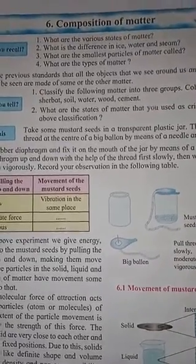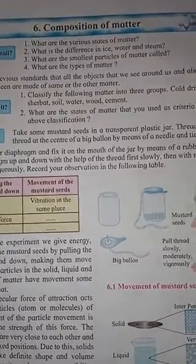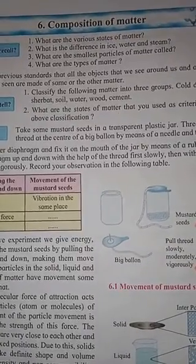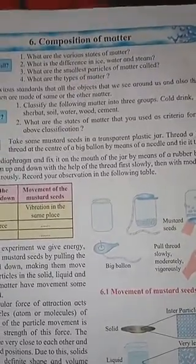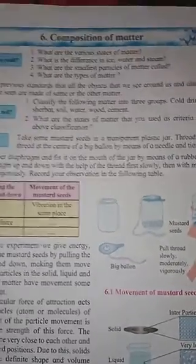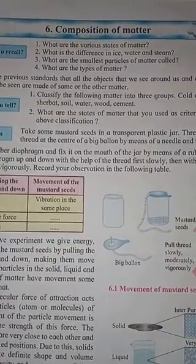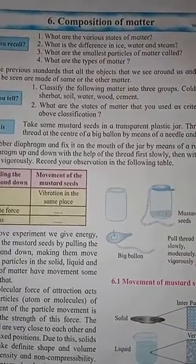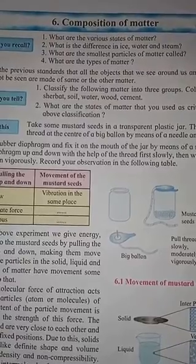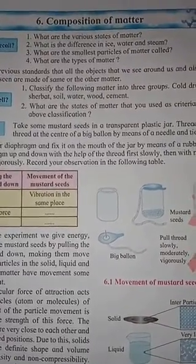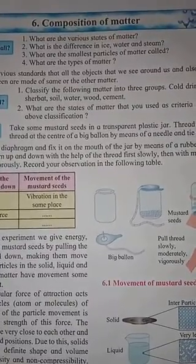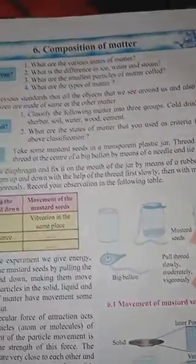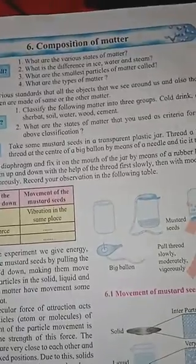The states of matter used as criteria for the above classification are solid, liquid, and gas. Solid is the first group, liquid is the second group, and gas is the third group. Solids are rigid or can be plastic or elastic, and they have a definite shape with strong intramolecular force.